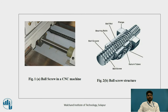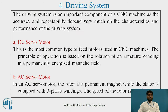Figure 1 shows the ball screw in the CNC machine, and Figure 2B shows the ball screw structure placed inside the CNC machine. The driving system is an important component of the CNC machine, as accuracy and repeatability depend very much on the characteristics and performance of the driving system.